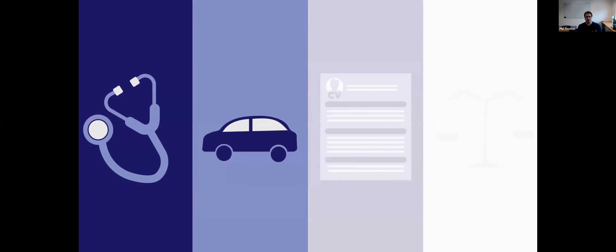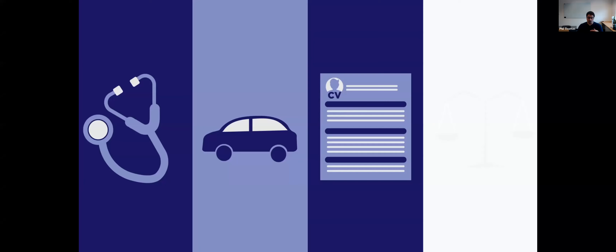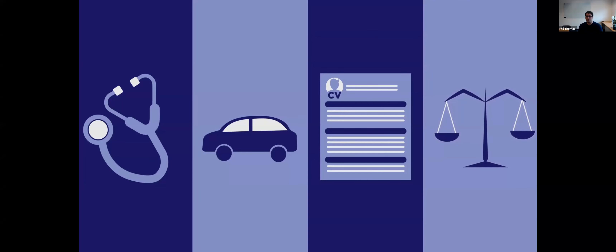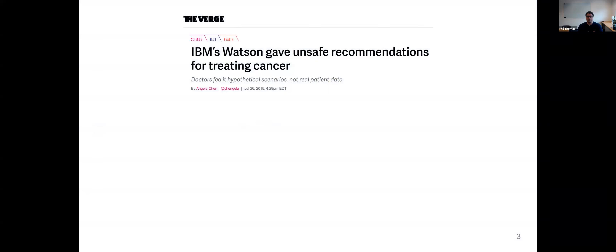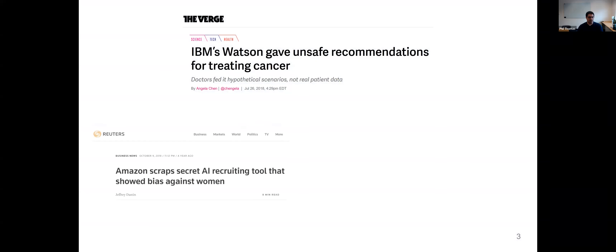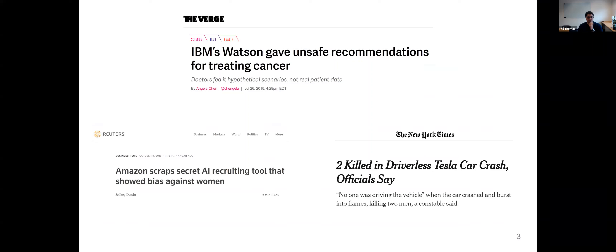AI systems are already impacting our lives — from medical decision support to autonomous vehicles, to software that looks at resumes submitted for a job posting and determines which ones should be looked at by a human, to software that influences criminal sentencing. But with the growing impact and influence of machine learning applications like these, there comes an increased potential for harm when these systems misbehave.